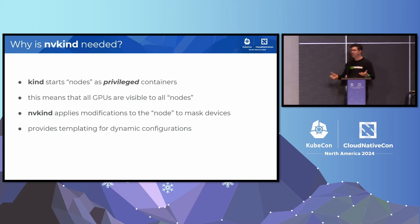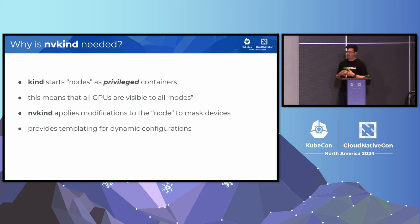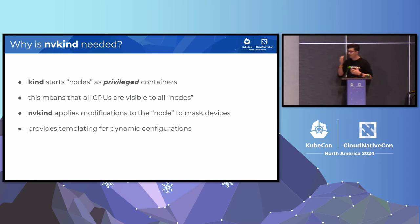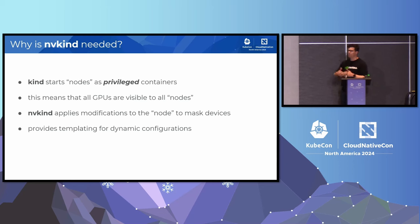Now, why is EnvyKind even needed? Why don't you just make the GPUs available in each of the nodes of your Kind cluster? One of the issues is that Kind actually starts the nodes as privileged containers, and that means that because these containers can see all of /dev, all of the GPUs on the system are available to every single node in your Kubernetes cluster, which is not ideal for testing purposes. So what EnvyKind does is it wraps Kind, applies some modifications to the nodes once they've started up to mask the devices that you don't want in the container. We've also added some functionality to allow for templating to make things a bit more dynamic.